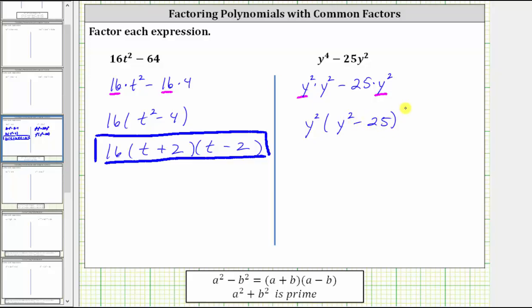Y squared minus 25 is a difference of squares, and therefore this does factor further. We have y squared times two binomial factors, because y times y is y squared. The first terms are y and y, and because five times five is equal to 25, one binomial factor is y plus five, and the second binomial factor is y minus five. This is the correct factored form of the given expression.